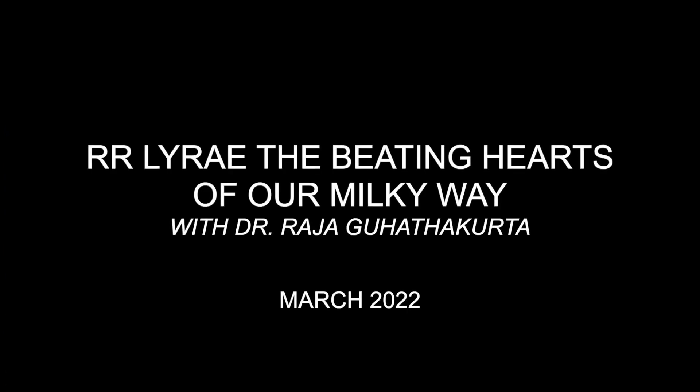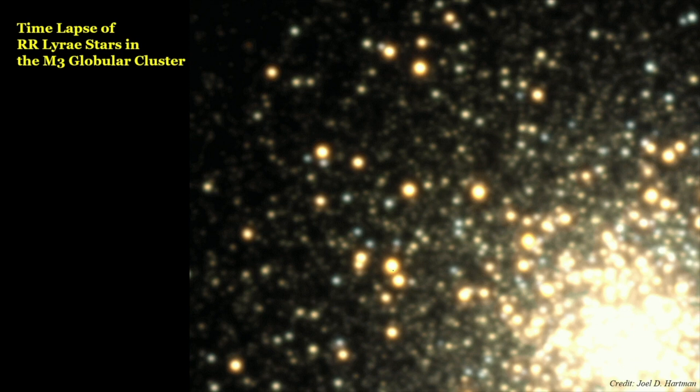I'm going to talk about RR Lyrae, the beating hearts of our Milky Way. Our Milky Way has many hearts and we have discovered 200 of these hearts, but others have found even more. If you look closely at this image—I'm going to turn my laser pointer on and put it right next to one of these beating hearts—they are pulsing in brightness. It's a time lapse and it's looping. Actually, even if it didn't loop, the stars loop.